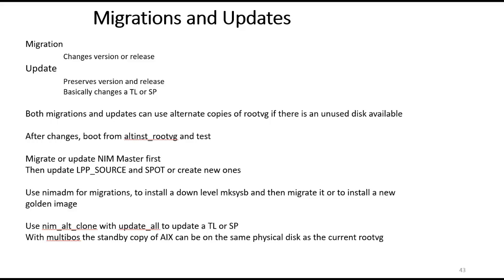You always need to make sure the NIM master is at the highest level, so update that first, then bring the LPP sources and spots up to date or create new ones for the version you want to be at. If you want to do migrations — changing versions or release — you're going to use NIM ADM. You can take a back-level makesysb, such as AIX 6.1, and either migrate it on the fly, or take that makesysb, migrate it, and create a brand new 7.2 golden image that you then install from. If you're doing updates, you can use NIM alt clone to update a technology level or service pack on a client to a different disk.